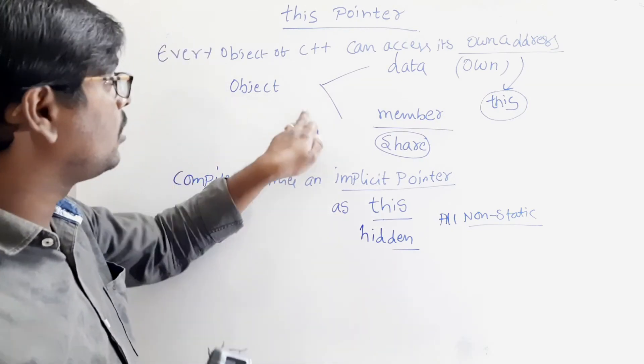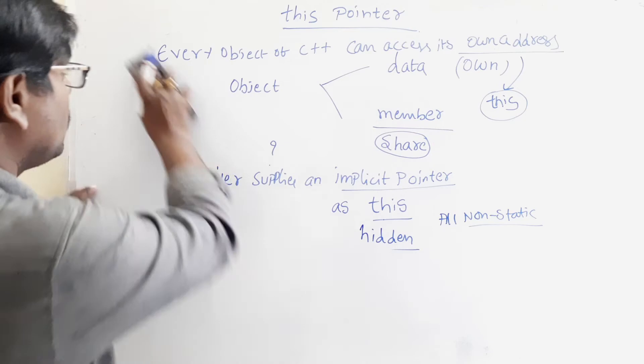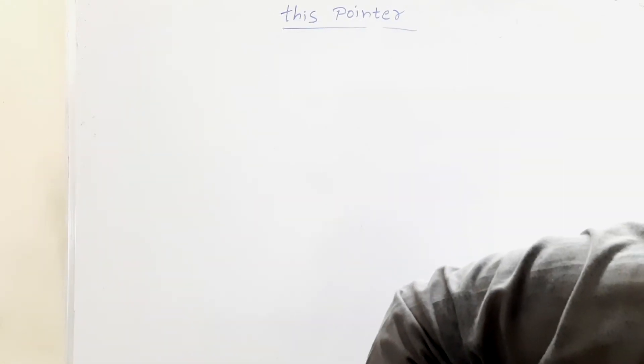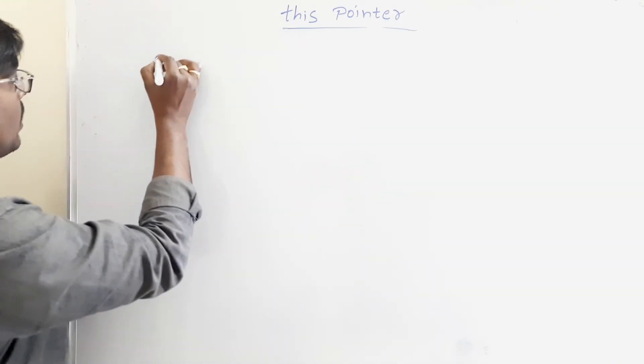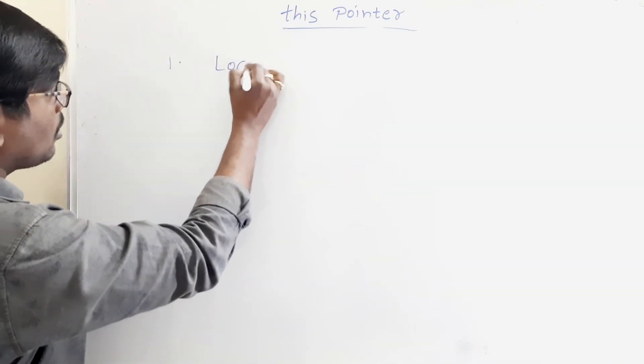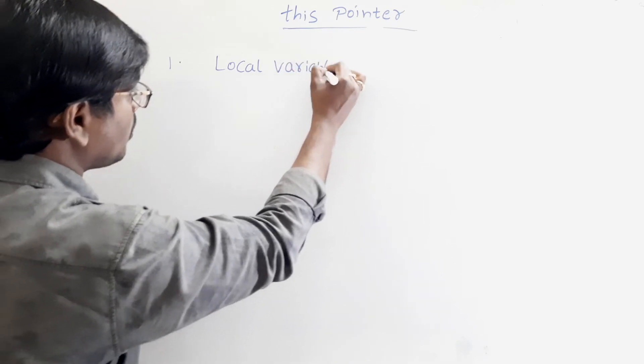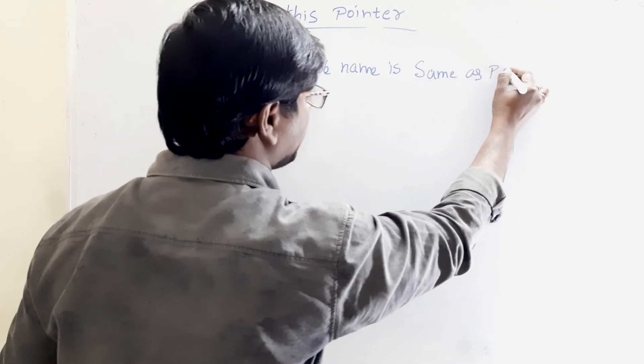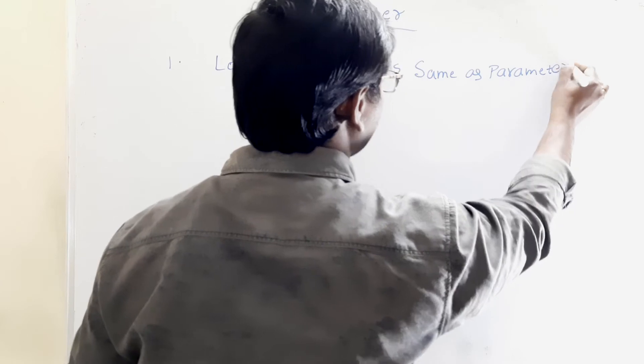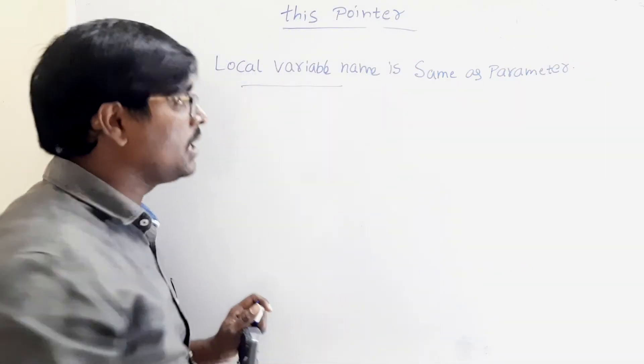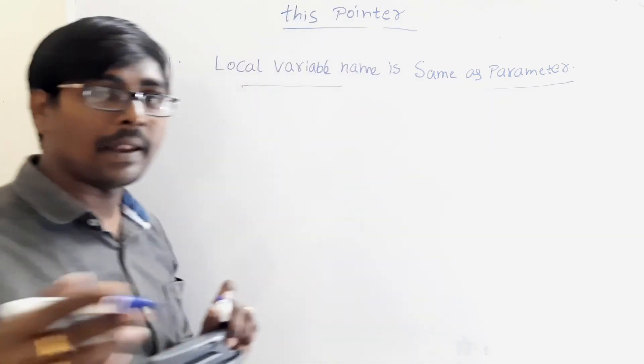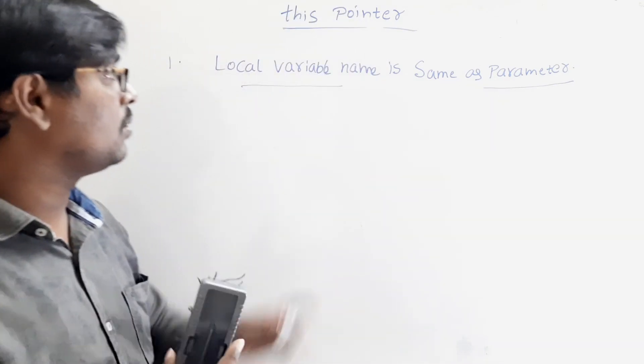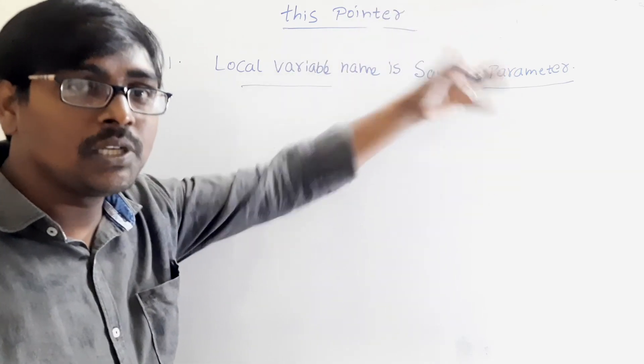This is the introduction part to this. The main advantage is, once the this is completed, what are the different parameters we have to follow. Main advantage is when the local variable name is same as the parameter name. Here, parameter name is simply the object value.